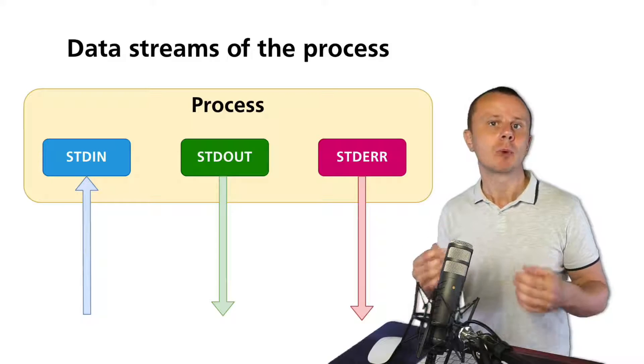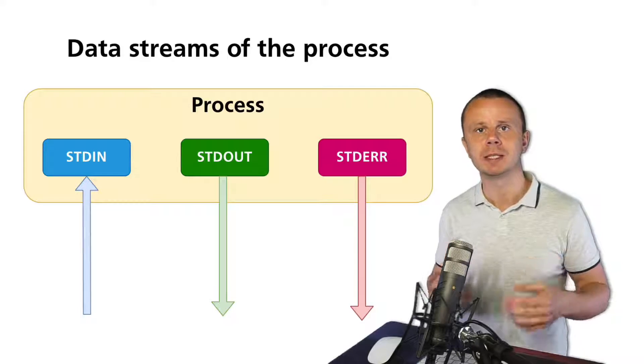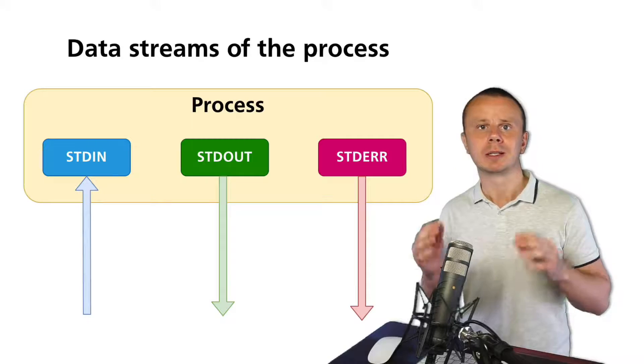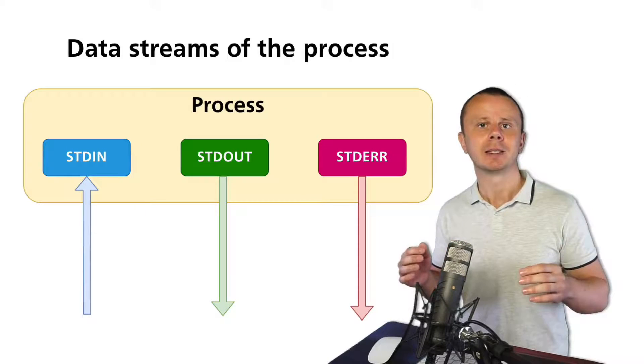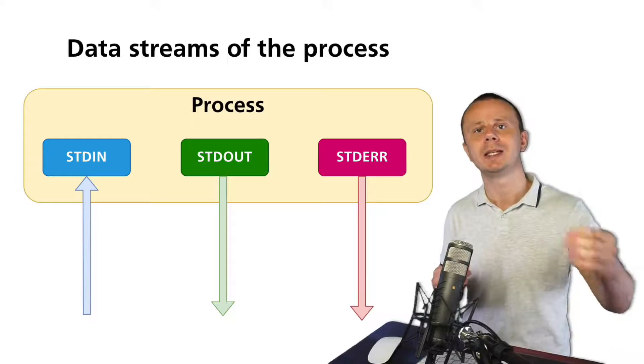Some processes also accept some text via stdin. An example of such a process is cut. Next, you are able to concatenate different processes and send data from stdout from one process to stdin of the next process using the pipe operator.